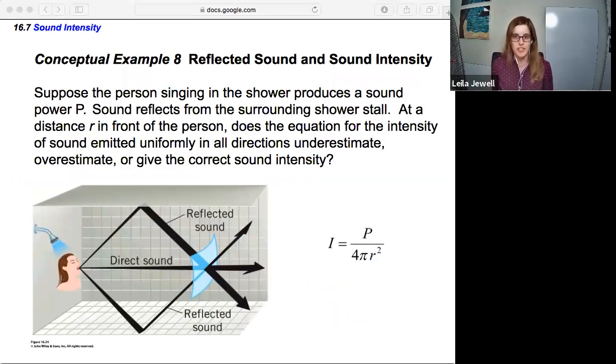Let's look at a conceptual example: reflected sound and sound intensity. Suppose the person singing in the shower produces a sound power P. Sound reflects from the surrounding shower stall. At a distance r in front of the person, does the equation for the intensity of sound emitted uniformly in all directions underestimate, overestimate, or give the correct sound intensity? Think this through before you go on with the video, so pause now.